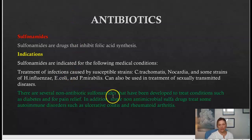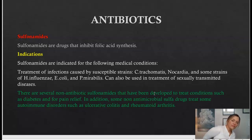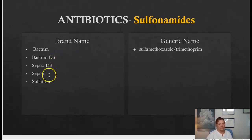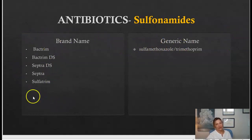Some antimicrobial sulfa drugs also treat autoimmune disorders such as ulcerative colitis and rheumatoid arthritis. Common names for the antibiotic form of sulfonamides include Bactrim, Bactrim DS, Septra, and Septra DS — the generic name is the same as these brand names.